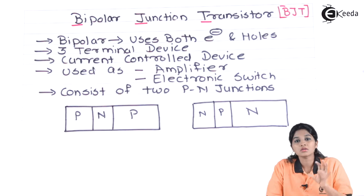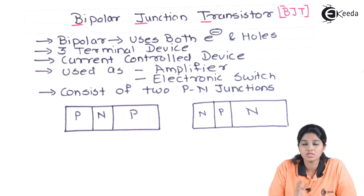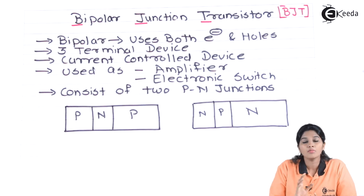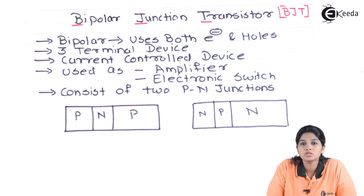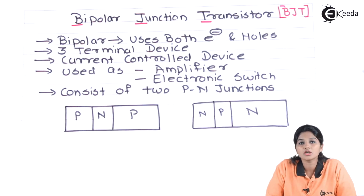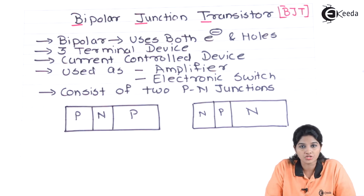BJT is a current control device. That means the output current, voltage and power of BJT can be controlled by the input current. That's why it is called a current control device. BJT has many applications in electronic systems. For example, in communication systems, amplifiers are required and those amplifiers use transistors or BJT.